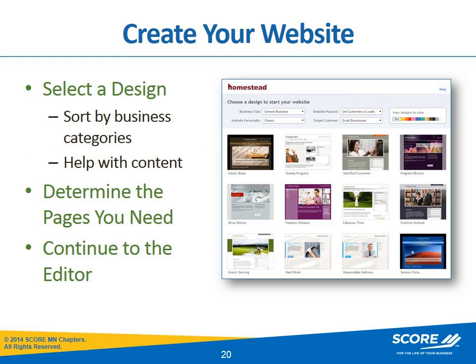The second step is to select a design compatible with your business type. There are many pre-designed templates, styles, colors, and layouts. Look at other websites on the internet to determine what you want yours to look like — this takes a little artistic eye, but you can change it later. Determine the types of pages you will need. The online tool we have chosen gives you five pages in the basic grade; many times a home page, an about us page, and a products or services page is all that is needed.